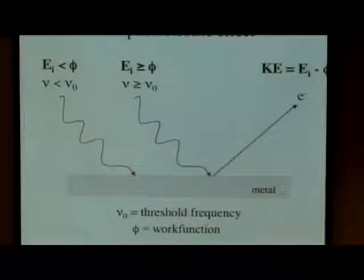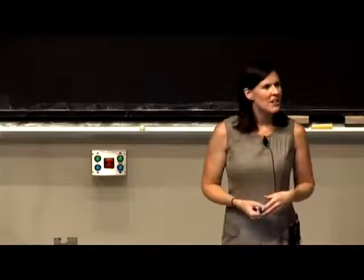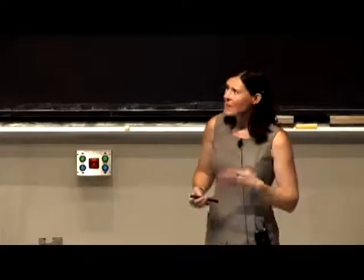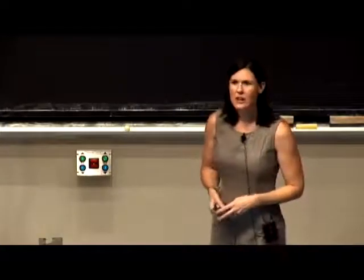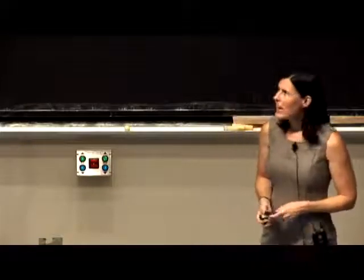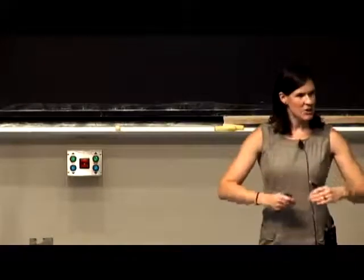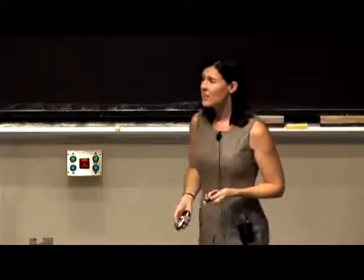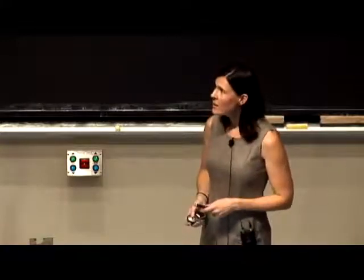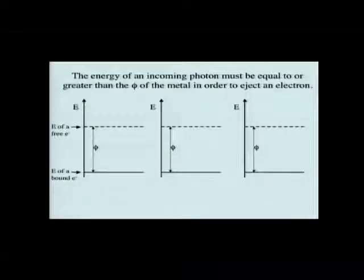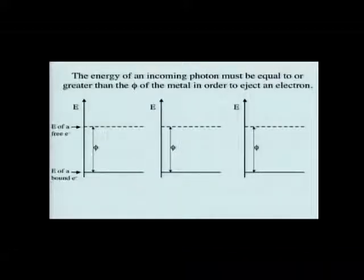Most of you understand this relationship, which is in your notes. That is what you solved the clicker question on — how you can figure out the kinetic energy of the ejected electron by looking at the difference between how much energy you put in and how much energy is required to eject that electron. In this class, we'll be talking about energy a lot.